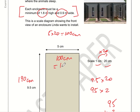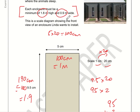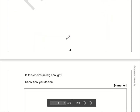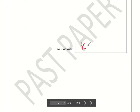100 centimetres is 1 metre. 190 centimetres divided by 100 is 1.9 metres. So in real life the enclosure is 1 metre by 1.9 metres. The enclosure must be a minimum of 1.8 m by 0.9 m. One metre is bigger than 0.9 m and 1.9 metres is bigger than 1.8 metres, so yes, the enclosure is big enough.